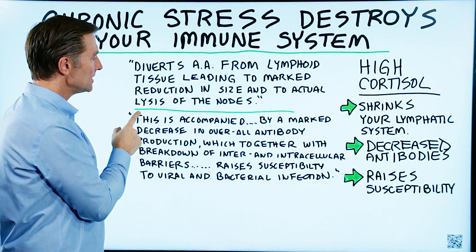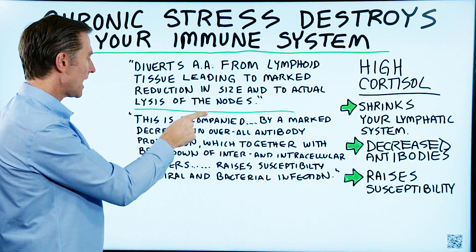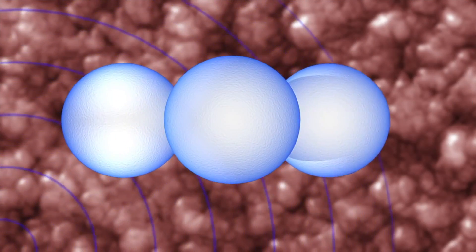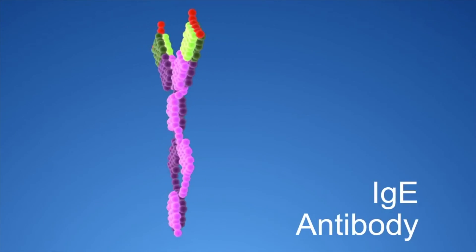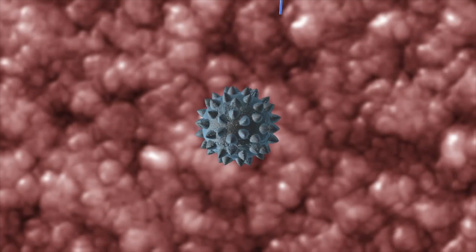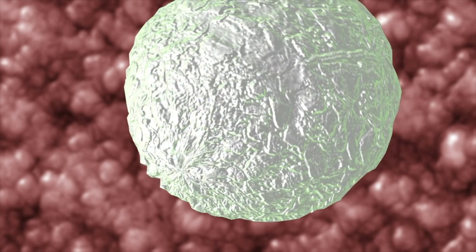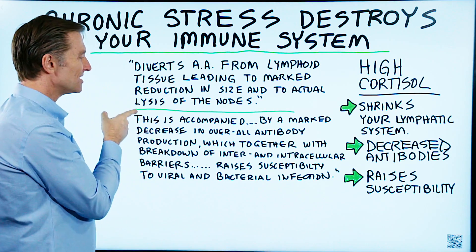The next point says this is accompanied by a marked — meaning distinctive and emphasized — decrease in overall antibody production. Antibodies are produced by your immune system to help develop immunity. Antibodies don't necessarily kill pathogens, but they put a tag or indicator on the pathogen for other immune cells to kill them. So if you have enough antibodies in your system, you are protected. But with high cortisol, you have a decrease in overall antibody production.